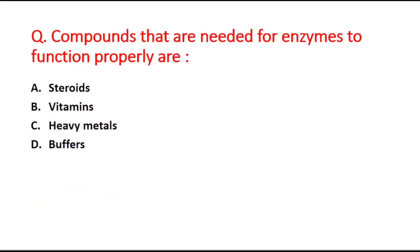Next question: compounds that are needed for enzymes to function properly are blank. Option A is steroids, option B is vitamins, option C is heavy metals, and option D is buffers. The right answer is option B, vitamins.